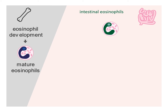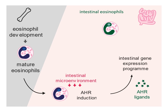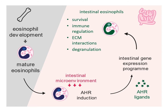In summary, we have shown that the eosinophil transcriptome differs substantially between the bone marrow and the small intestine. After migrating to the small intestine, eosinophils upregulate AhR and turn on an intestinal gene expression program, which is partially controlled by AhR. This leads to phenotypic and functional changes in cell survival, immune regulation, extracellular matrix interactions, and degranulation. This work identified AhR as a critical factor in mediating tissue adaptation of eosinophils in the intestine.